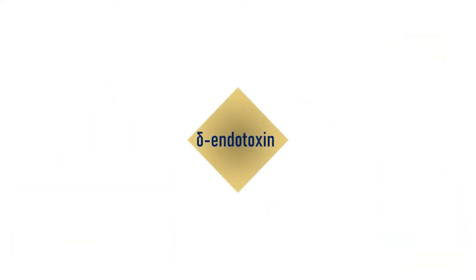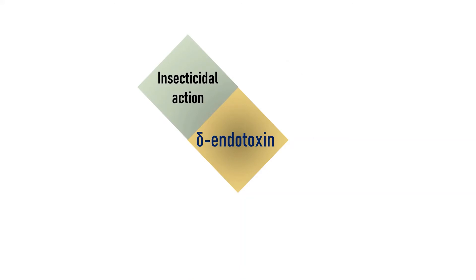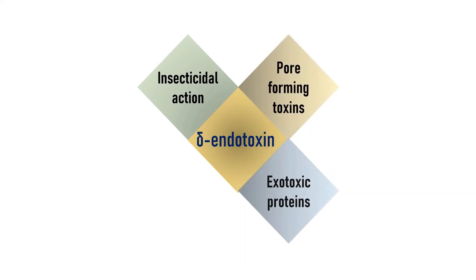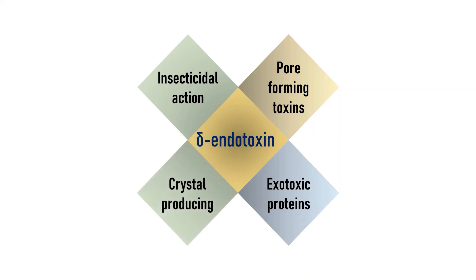This bacterium produces an insecticidal crystal protein during sporulation. Because of their distinguished property, they got their name Delta Endotoxin — separate from Alpha, Theta and Gamma endotoxins produced by the same Bacillus thuringiensis. These Delta Endotoxins show insecticidal, pore-forming and exotoxic properties, being crystalline in structure.